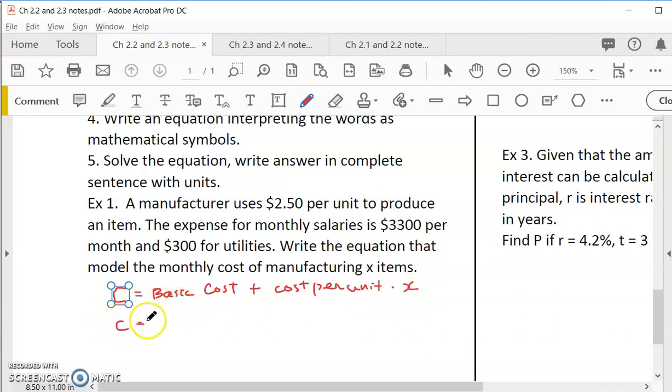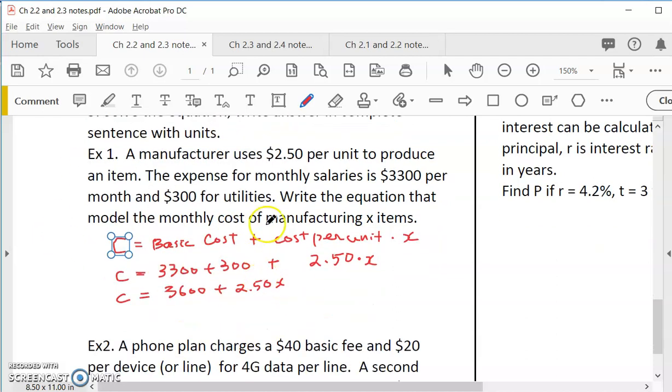And do we know? Is there anything that we don't know? Basic cost is they actually tell us it is not 250, but 3300 and 300. You have to pay both. And then for the cost per unit is 250. But this is for one. If you are manufacturing X item, you multiply by X. So this would be the model or equation that gives us the monthly cost per month for the manufacturer. So combine the first two together. We have 3600 plus 250X. That gives us an equation. And this is called modeling.